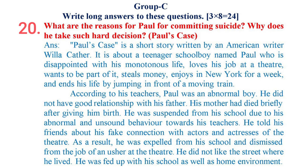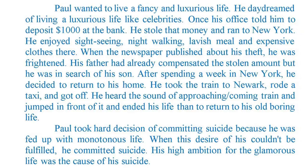According to his teachers, Paul was an abnormal boy. He did not have a good relationship with his father. His mother had died shortly after giving him birth. He was suspended from school due to his abnormal behavior towards his teachers. He told his friends about his fake connection with actors and actresses of the theater. As a result, he was expelled from school and dismissed from the job of an usher at the theater. He did not like the street where he lived and was fed up with both his school and home environment.